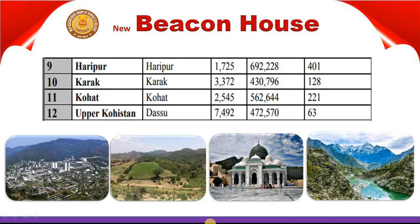The tenth district is Karak. Its headquarter is also in Karak. It has an area of about 3,372 km², a population of 430,796, and a density of 128 people per km². The eleventh district is Kohort. Its headquarter is also in Kohort. It has an area of 2,545 km², a population of 562,644, and a density of 221 people per km².